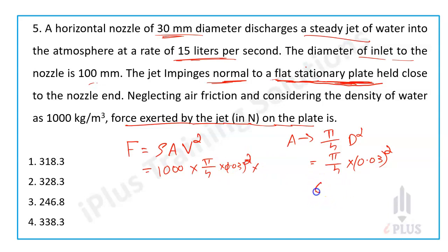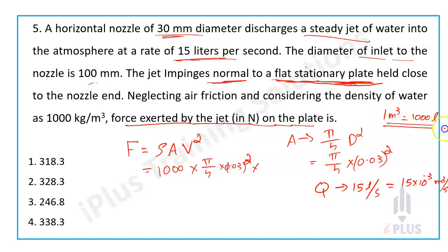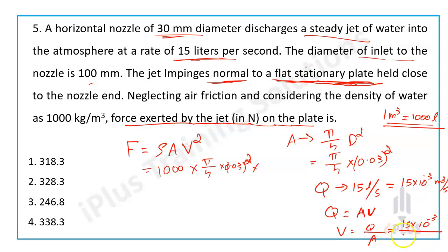Velocity V is obtained from Q equals A into V. Discharge Q is 50 liters per second equals 50 into 10 to the minus 3 meter cube per second. So V equals Q by A equals 50 times 10 to the minus 3 divided by pi by 4 into 0.03 squared, giving V equal to 70.74 meters per second. The answer comes out to 21.22 meters per second.